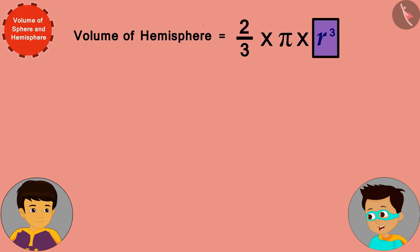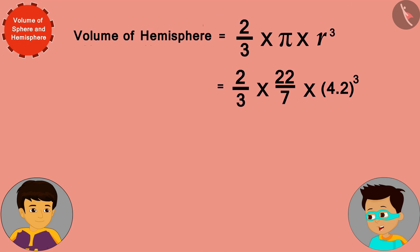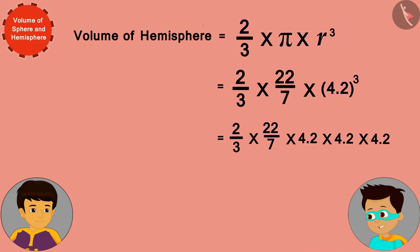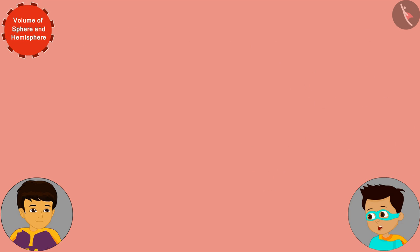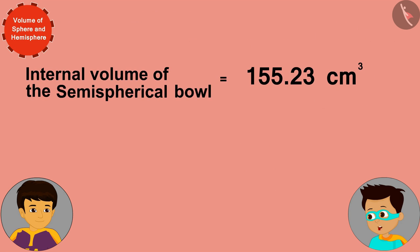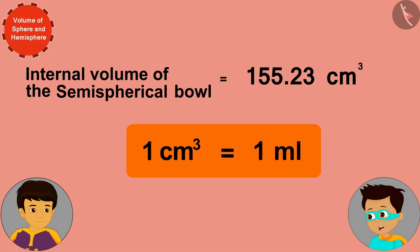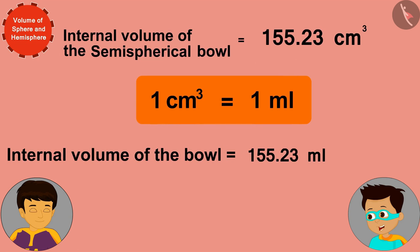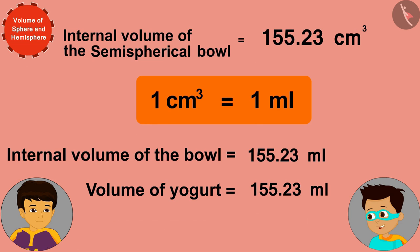Now, I can solve this by replacing r with the inner radius of the bowl, 4.2 cm. The internal volume of the semi-spherical bowl is 155.23 cm³. And because 1 cm³ is equal to 1 ml, we can say that the internal volume of the bowl, or the volume of yogurt, is 155.23 ml.